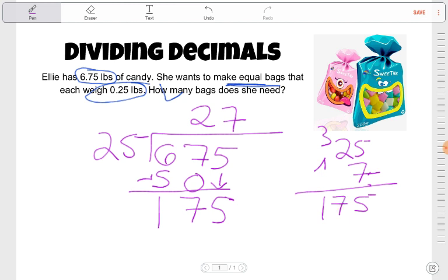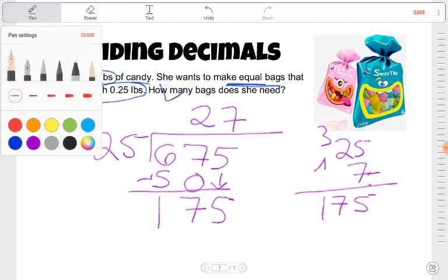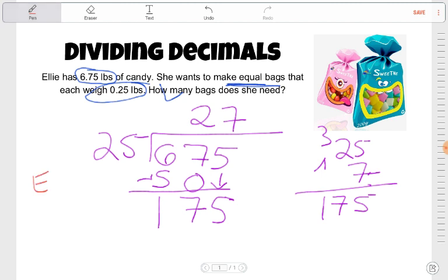So our answer is 27. And our answer sentence will be, Ellie needs 27 bags.